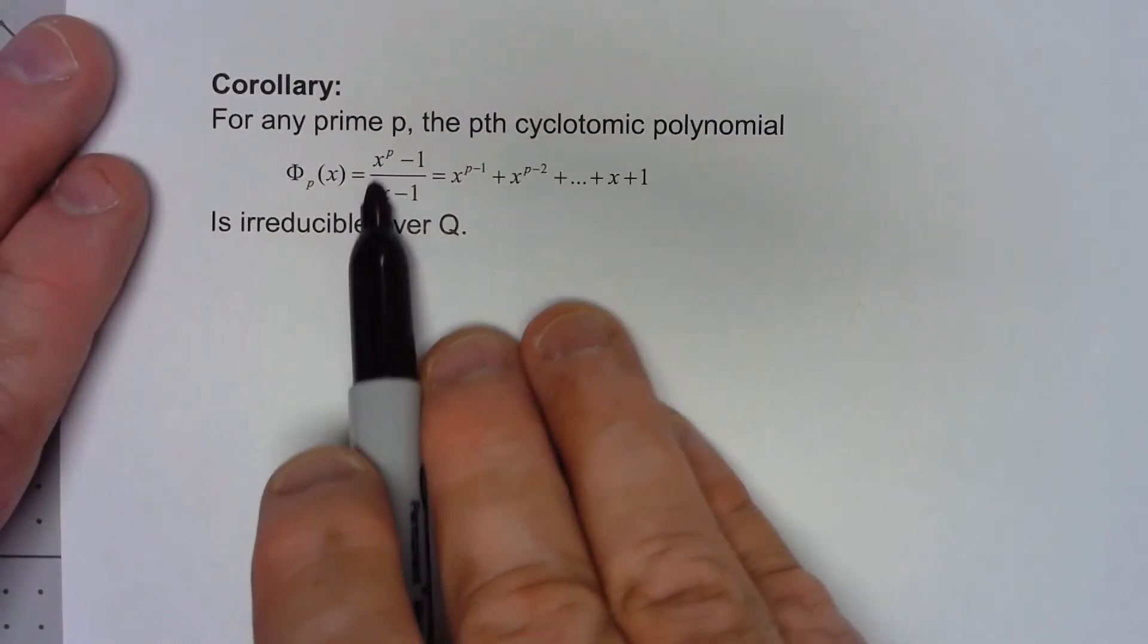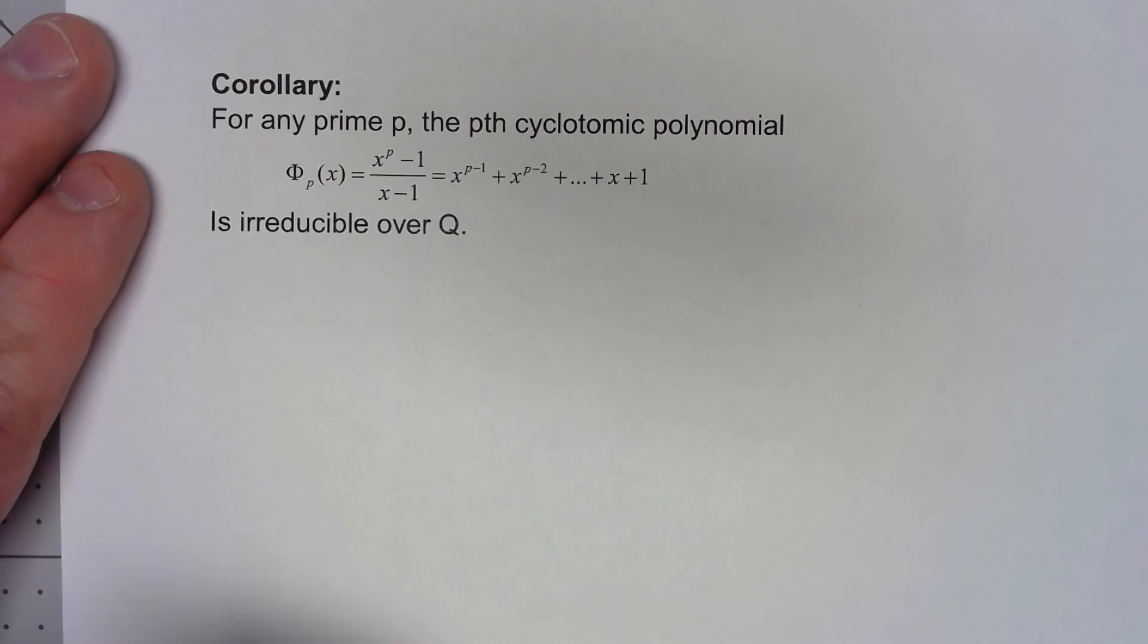Now it is important that p has to be a prime. This is not necessarily true if we had some other integer.